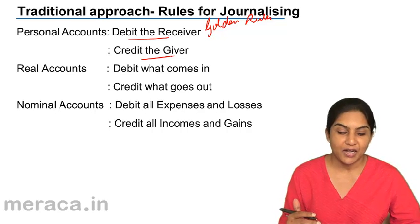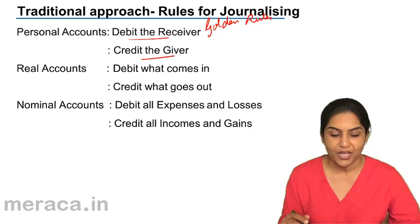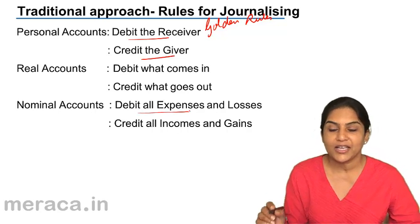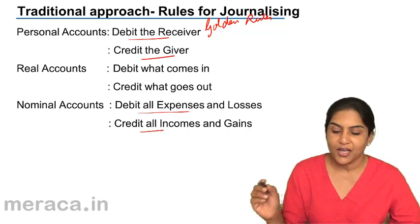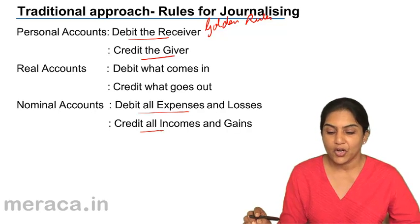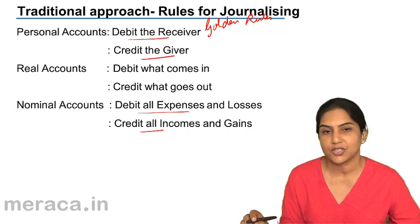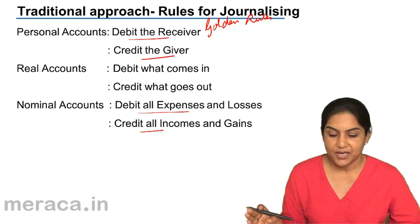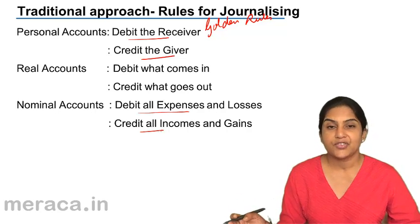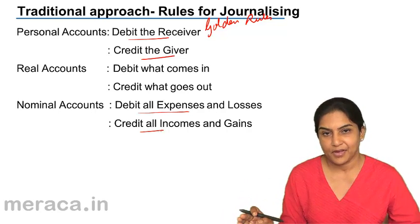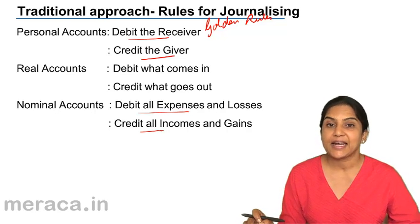Next we have nominal accounts — in a way, we have covered this when we did the accounting equation. For nominal accounts, debit all expenses and losses, credit all incomes and gains. Expenses include rent, salary, wages, lighting, electricity, telephone charges, and audit fees. Incomes and gains include interest income, sales, and profit.